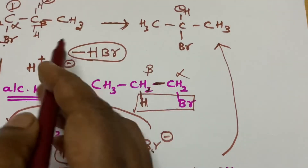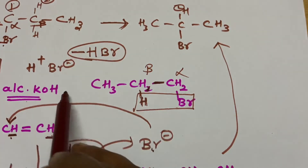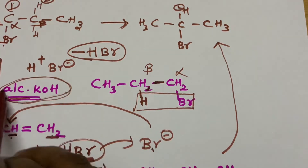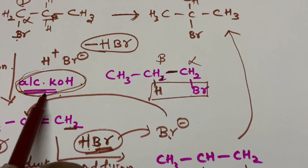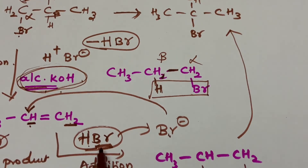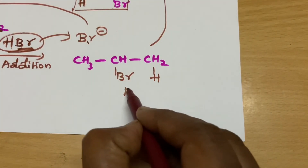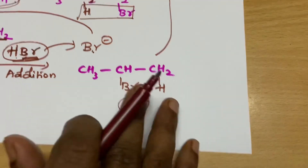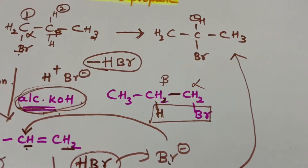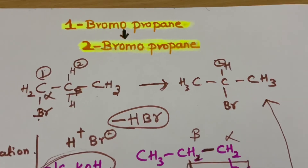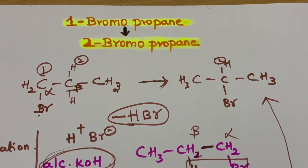So to summarize: you have to do elimination using alcoholic KOH — remember, not aqueous KOH, but alcoholic KOH — followed by addition of HBr, and you will get the Markovnikov product which is 2-bromopropane. I hope this video helped you. Meet you again in my next video, thank you.